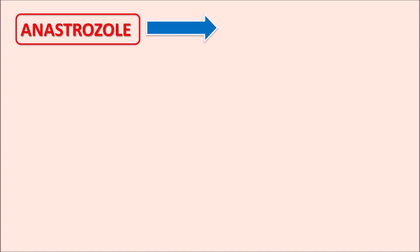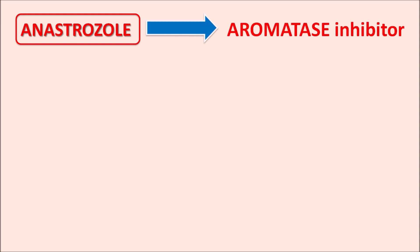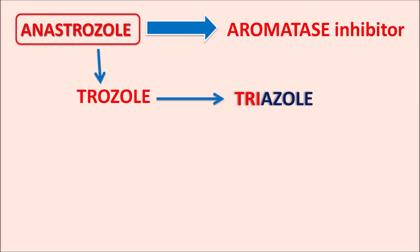Hi everyone. Today in this video we are going to discuss about anastrozole. What is this drug anastrozole? This drug is an aromatase inhibitor. We can identify some structural information from the suffix of the drug. The suffix 'trozole' indicates it is having a triazole ring system. So anastrozole is a triazole-containing aromatase inhibitor.